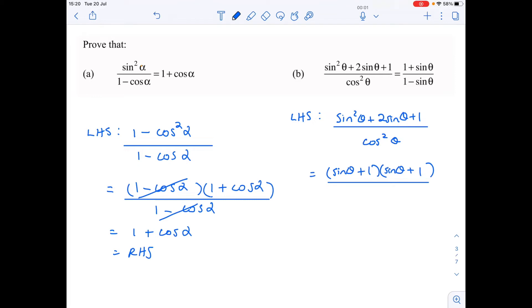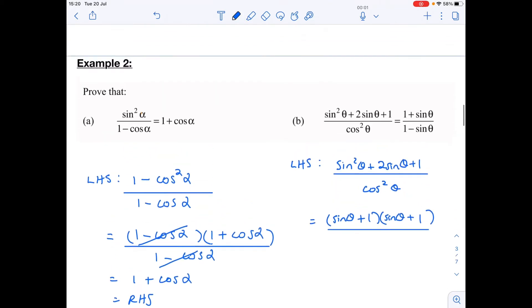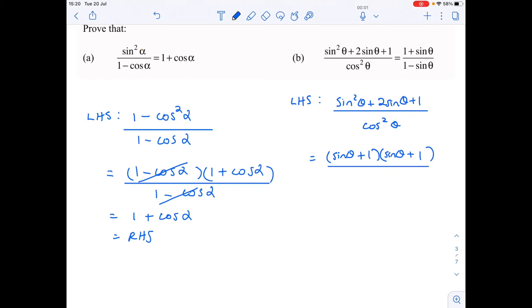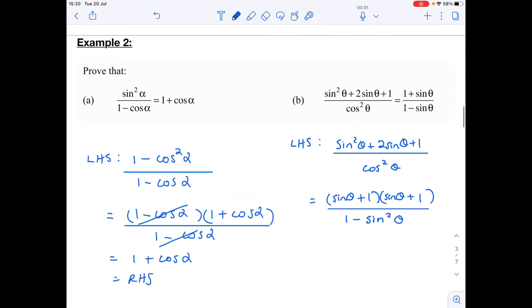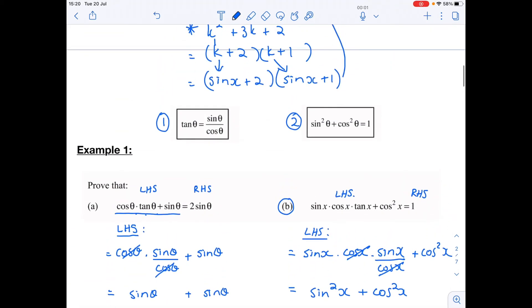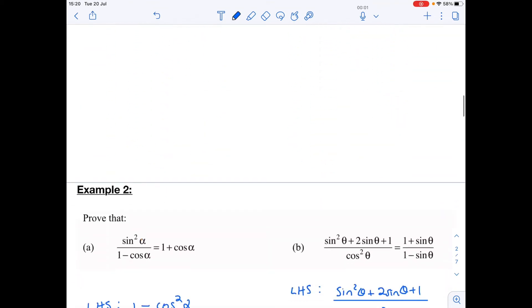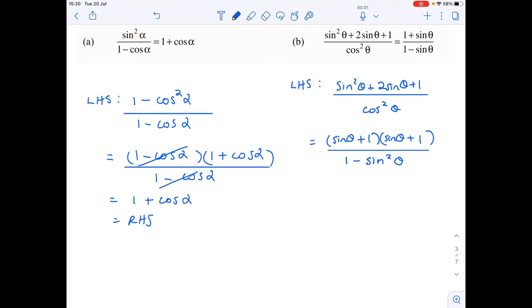Then at the moment we've got cos squared theta at the bottom. That is not going to cancel with something, but I'm hoping by now that you are spotting that cos squared theta can also be written as 1 minus sin squared theta because of the second identity. All I'm doing here is I'm replacing cos squared with 1 minus sin squared.